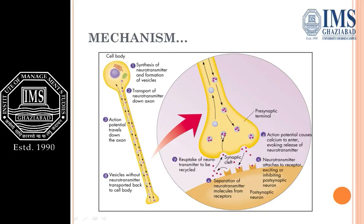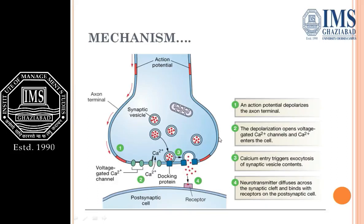As calcium concentration increases inside, the neurotransmitter is released into the synaptic cleft and attaches to the neurotransmitter receptor. The neurotransmitters then separate from the receptor molecules and are re-uptaken. To summarize the mechanism: action potential depolarizes the axon terminal, causing calcium-gated ion channels to open. Calcium enters and triggers exocytosis, releasing neurotransmitters. They diffuse across the synaptic cleft, bind with receptors, and the remaining neurotransmitter is reabsorbed.